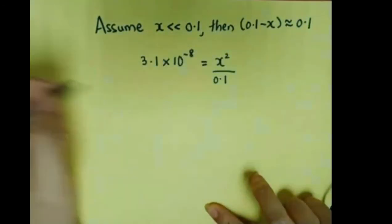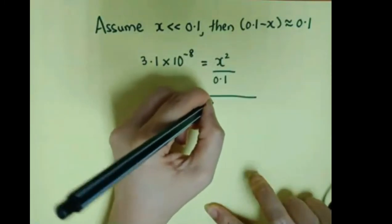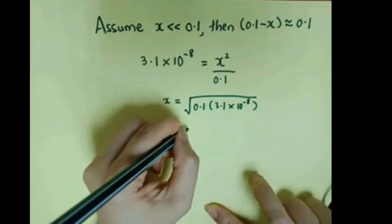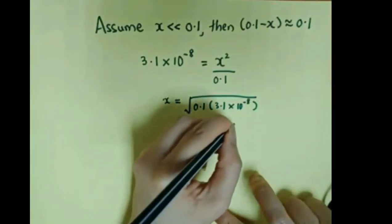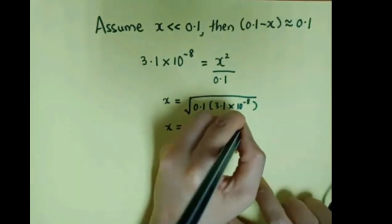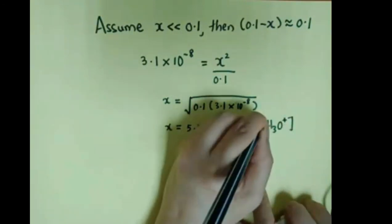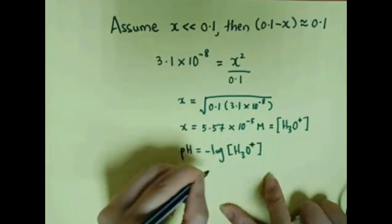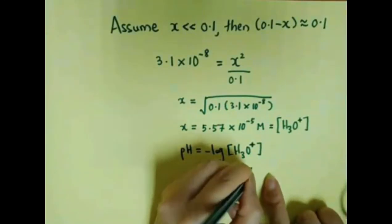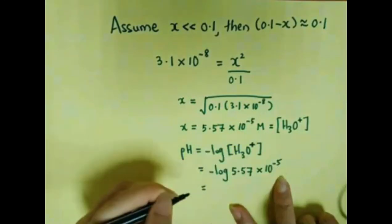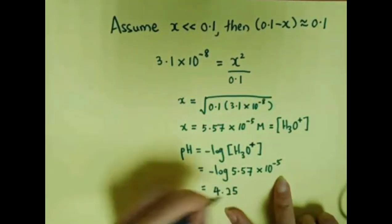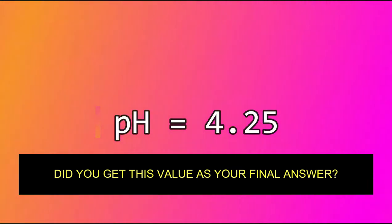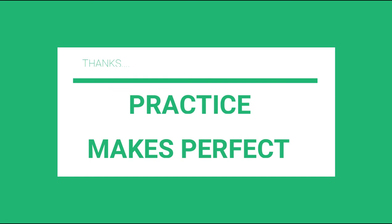With this assumption, x equals the square root of (0.1 times 3.1 times 10 to the power of negative 8). The x value represents the concentration of hydronium ions. To find the pH, we use the formula: pH equals negative log of the hydronium ion concentration. Using the calculator, the final answer is pH equals 4.25. Hope you all enjoy this video, bye!